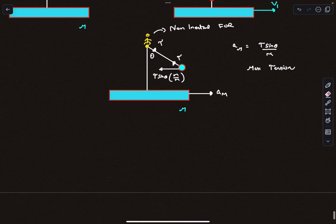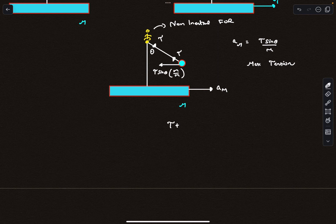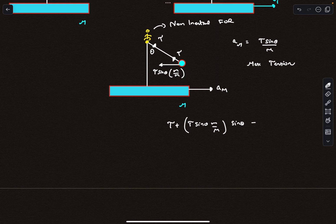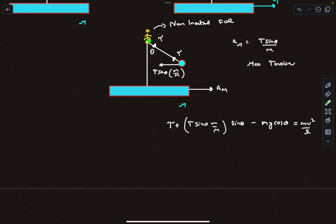Let's write F equals MA along the string. Along the string, the forces are tension T, then we have the component T sin theta small m by capital M times sin theta, then we also have the component of mg, which is mg cos theta. This would be equal to m V squared by L. Keep in mind, V is the velocity according to this guy, so V is the relative velocity, not the absolute velocity.